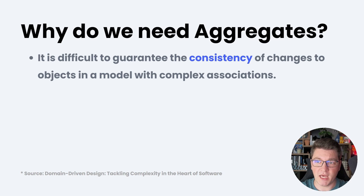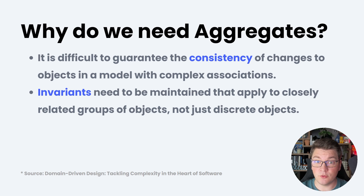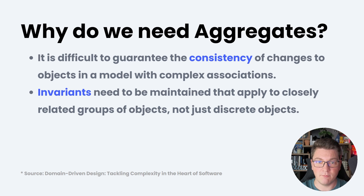This group of objects could have complex associations between them, and the more complex the relationships, the harder it becomes to guarantee consistency inside of a transaction. The key point here is that we're stressing consistency inside of an aggregate, not necessarily the relationships of the objects inside it. We want to enforce consistency and invariants on the group of objects making up the aggregate, not the individual objects.